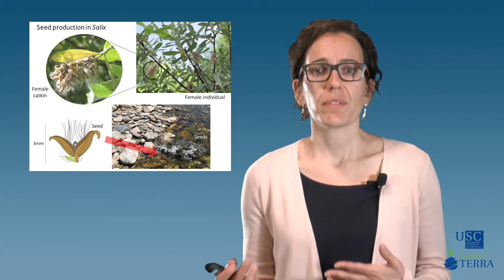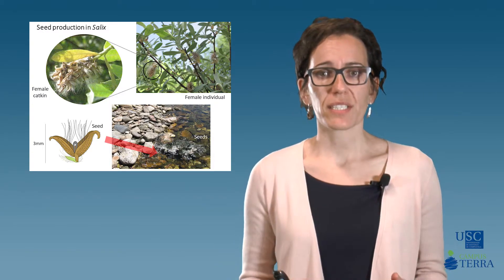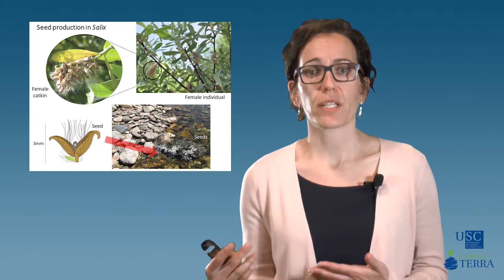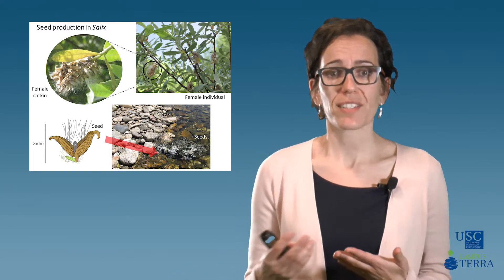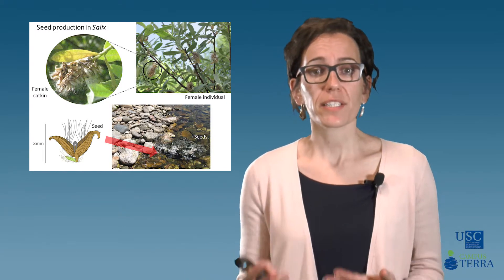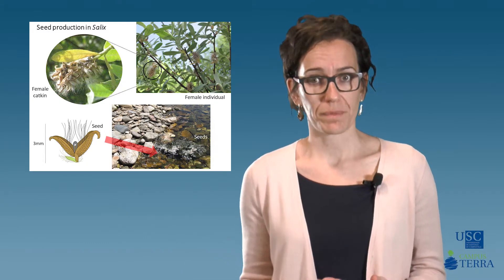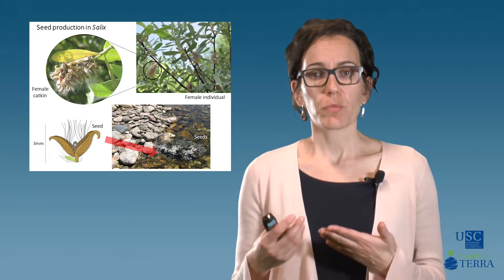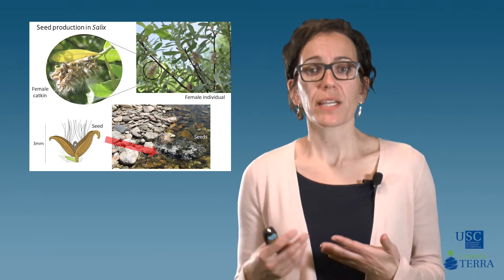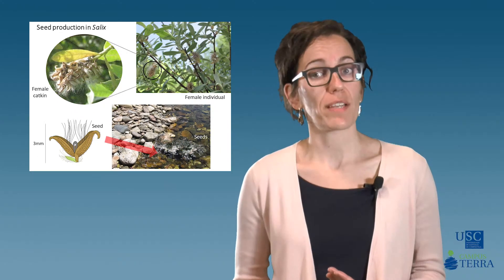In addition to the connectivity along the fluvial corridor, the temporal availability of propagules is a critical factor in sustaining riparian populations along rivers, because seed production and seedling establishment is strongly linked to seasonal hydrology, particularly for pioneer species such as those belonging to the family of Salicaceae. This picture shows the small seeds produced by a female individual of a Salix species. In this typical pioneer riparian species, seeds are released in large amounts that compensate their short viability.